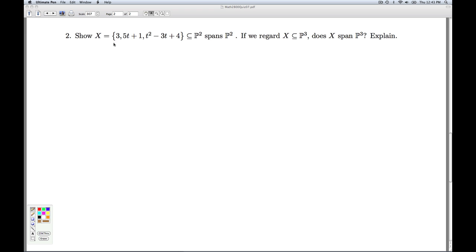Okay, so that'll do it for number 1. Alright, number 2. I'm given a set of vectors regarded as a subset of P2. So remember, that's all polynomials of degree 2 or less, including the 0 polynomial.